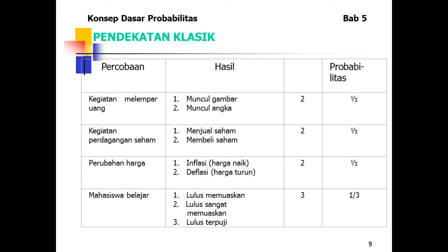Contoh lain: mahasiswa belajar — hasilnya lulus memuaskan, lulus, atau tidak lulus. Probabilitasnya adalah 1/3.